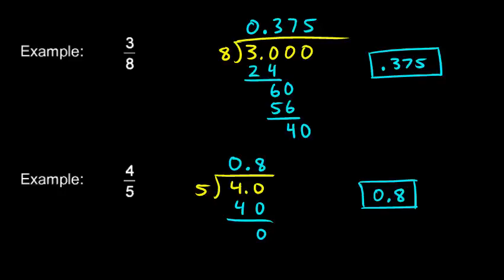So to convert a fraction into a decimal, just remember that the fraction bar means division, and you can do the conversion from fraction to decimal just by doing the division.